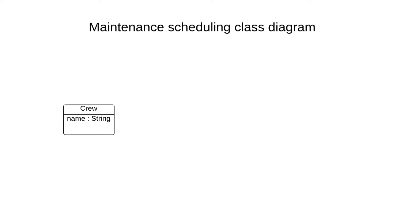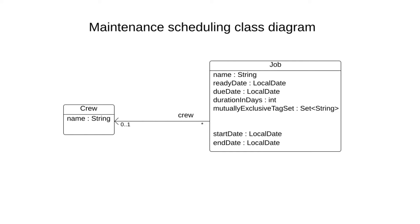How does the class diagram look? We have our Crew, which has a name — for example, crew A, crew B. We have our Jobs, which also have a name like the uptown street job or the downtown street job. Each job has a ready date and a due date — that's a LocalDate in Java. It also has a duration in days, which skips over weekends and non-working days. It also has a mutually exclusive tag set to identify when two jobs are in the same area, and we have the start and end date of a job, plus the crew assigned.